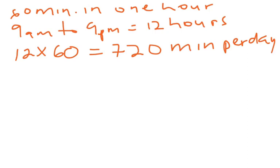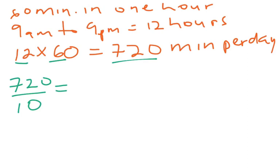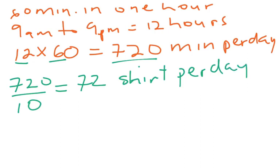One quick way to multiply this: multiply by power of zero, so just multiply 6 by 12 — that gives 72, then add a zero for 720 minutes. One t-shirt is sold every 10 minutes, so we divide 720 by 10. Dividing by a power of zero, the zeros cancel, leaving 72 over 1, which gives us 72 shirts per day.